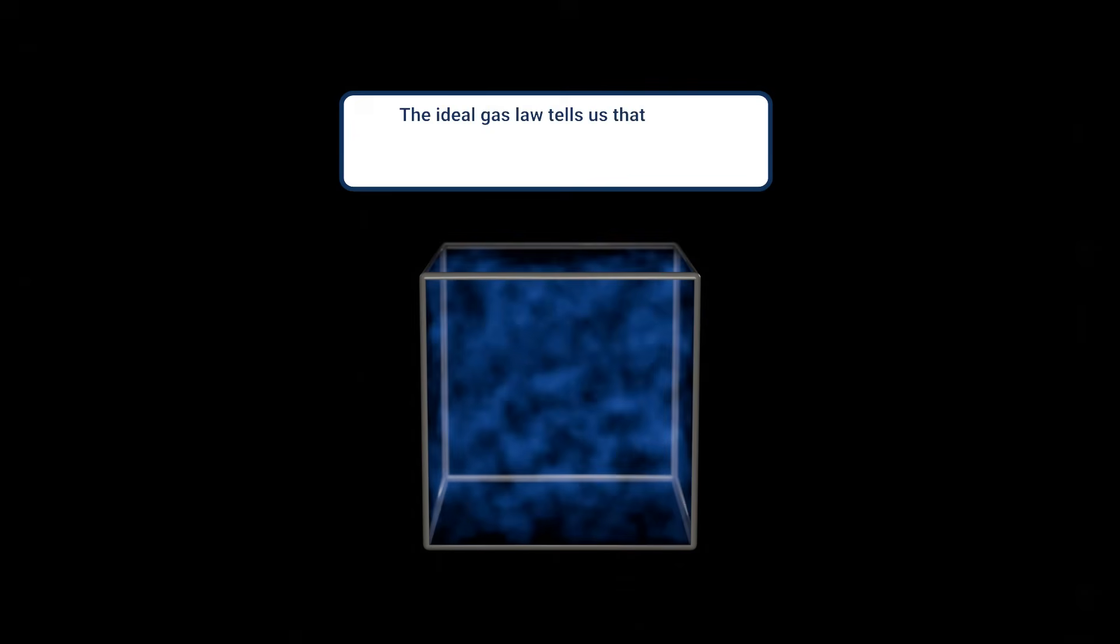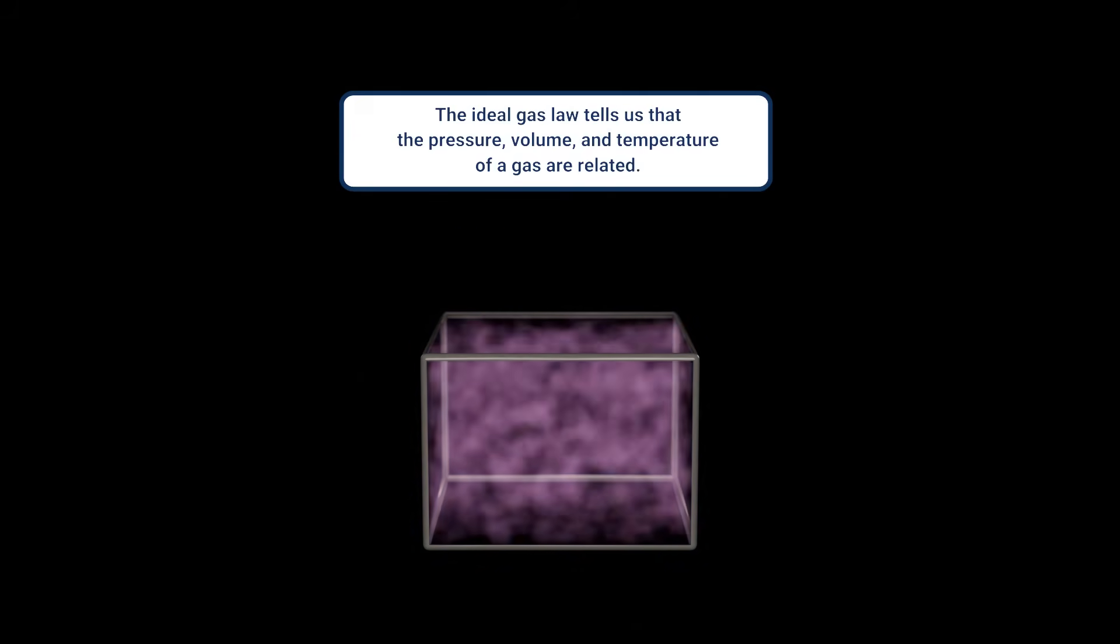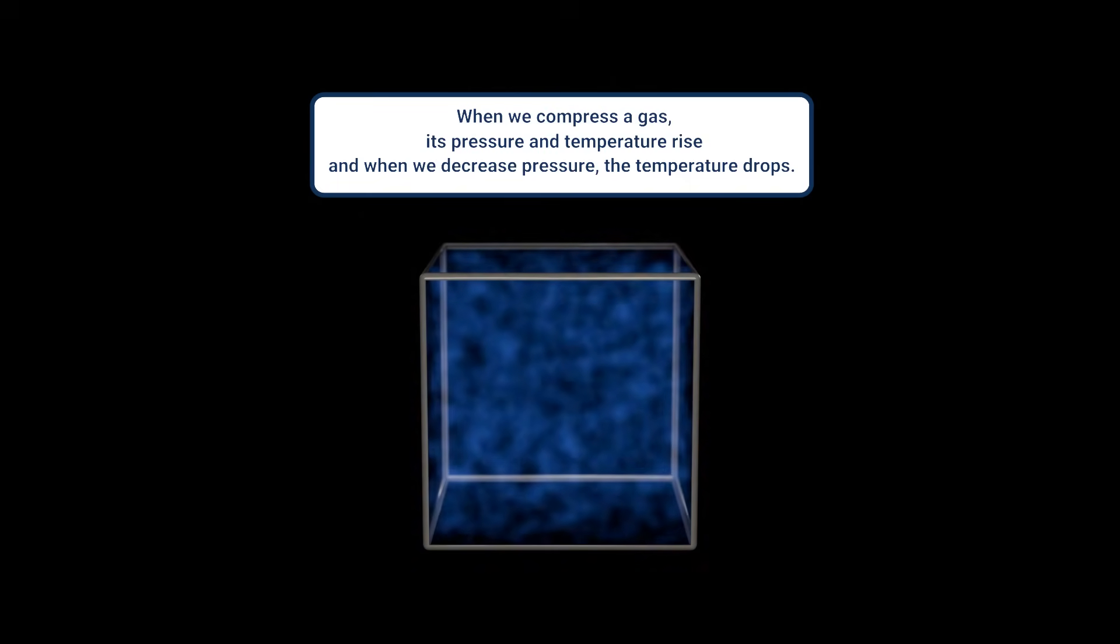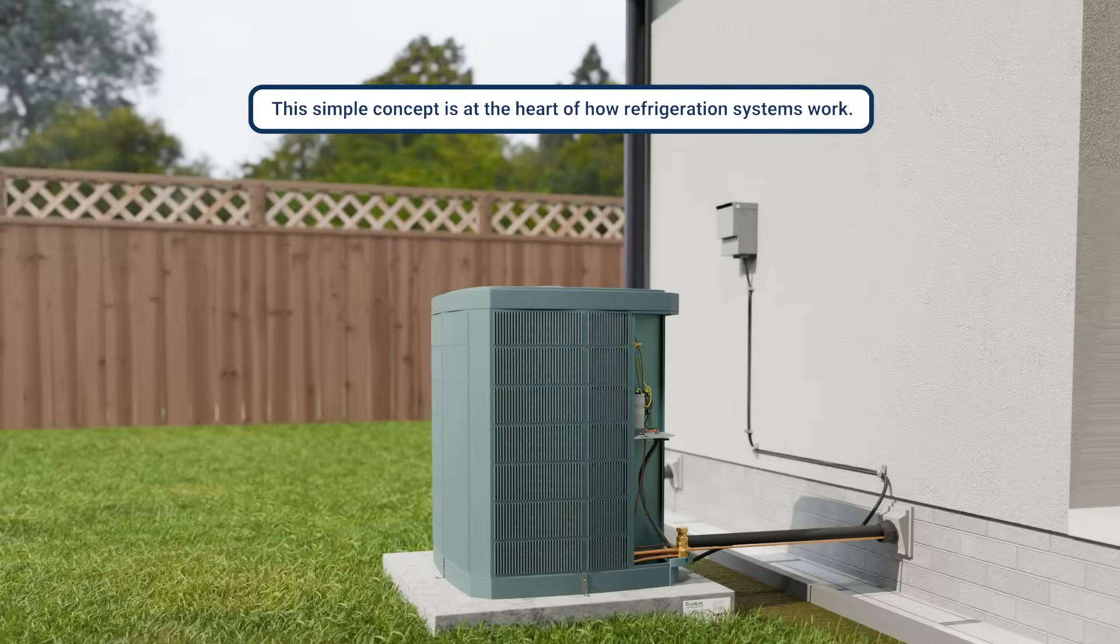The ideal gas law tells us that the pressure, volume, and temperature of a gas are all related. When we compress a gas, its pressure and temperature rise, and when we decrease pressure, the temperature drops. This simple concept is at the heart of how air conditioning and refrigeration systems work.